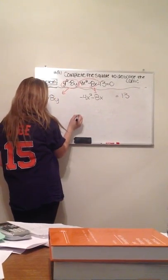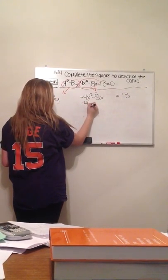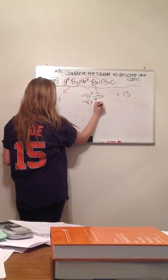I'm going to pull the 4 out for the greatest common factor, so it would be negative 4x squared plus 2x.